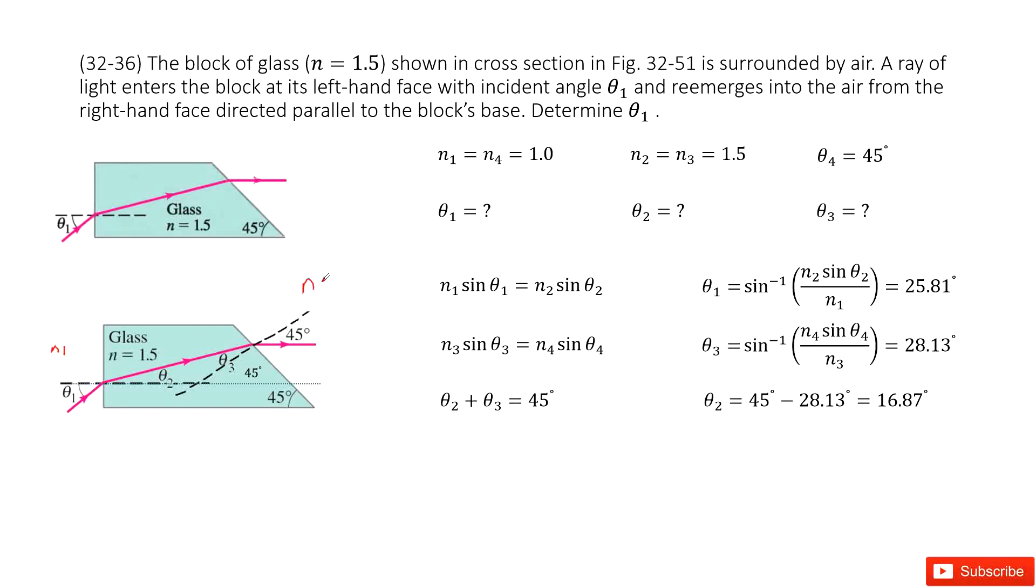So N2 equals N3 as 1.5, then comes out to the air. This one we can call N4. Now we know the incident angles: theta 1, theta 2, theta 3, and theta 4.